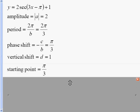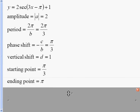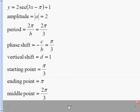Starting point is the phase shift, which is π over 3. We need to get an ending point, so we're going to add to that period. And then we've got to add the starting and the ending points and divide by 2, and that gives us our middle point. At these points, we have a max, min, and another max.